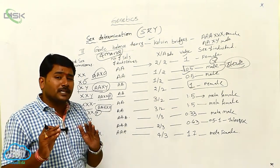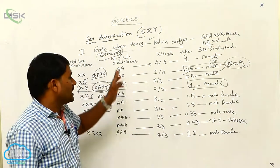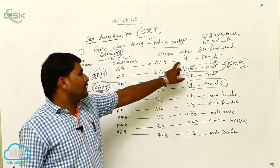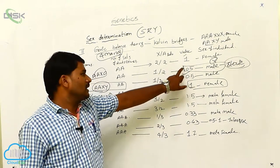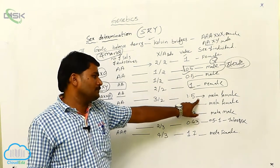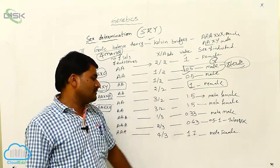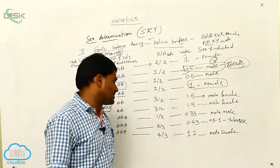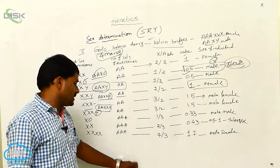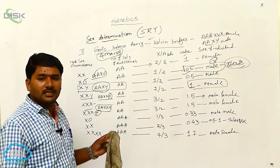That is why chromosomes independently not determining the sex. What is determining the sex? X by A. So even though X by A are determining the sex. If the value X by A is 1 that is female. If the X by A value is 0.5 male. And if the X by A value is more than 1, 1.5 meta-females. If the value is 0.33 that is meta-male. If 0.63 is intersex, 1.7 is that is meta-female more than 1. So this is genic balance theory which explains sex determination fashion Drosophila.